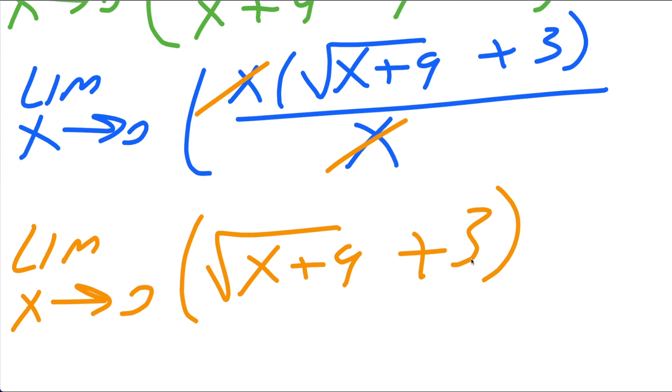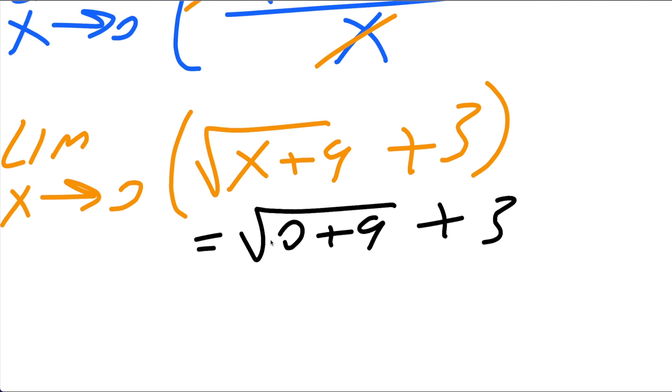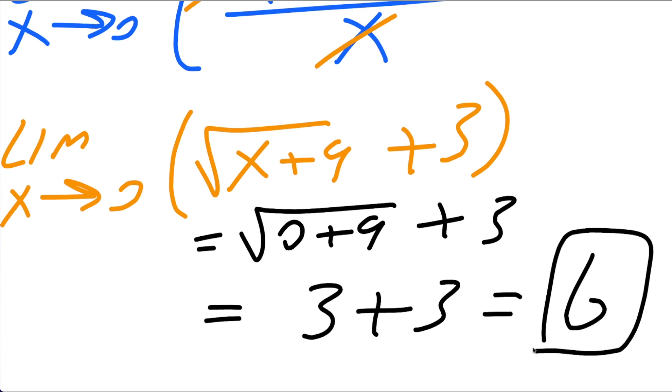At this point we can go ahead and plug in 0. And so if we plug in 0, we would get the square root of 0 plus 9, and then we have this still plus 3. The square root of 0 plus 9 is just 9, so the square root of 9 would give us a 3 plus 3, and our final answer would be 6. And that's all we need to do to solve these kind of problems.